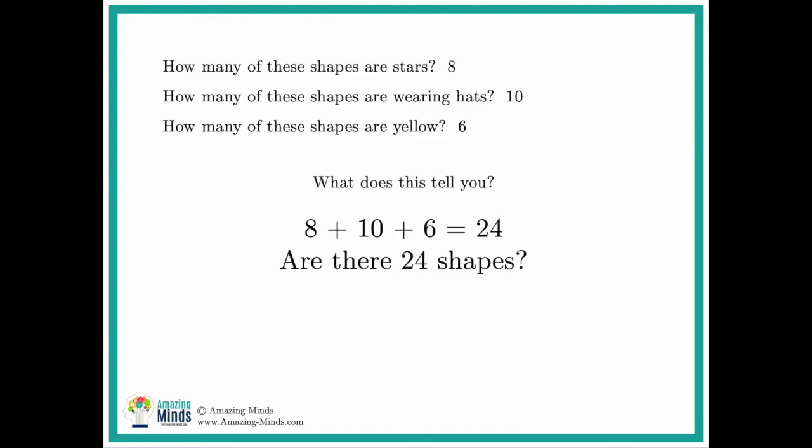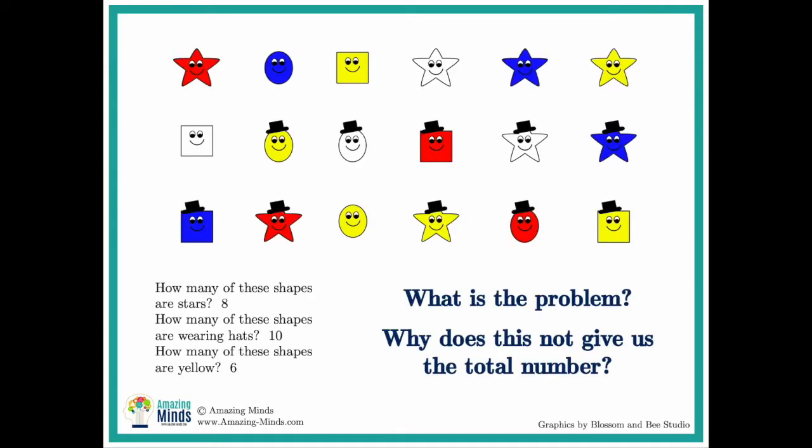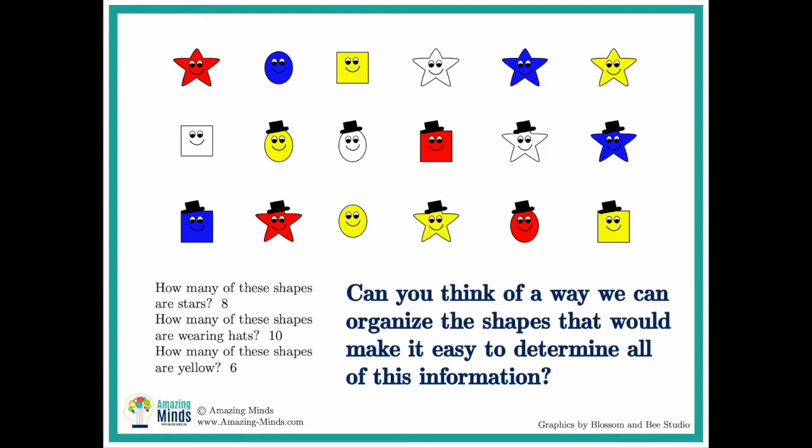Okay so now you found out that there are eight stars, ten hats, and six yellow shapes. So I can just add those together. Eight plus ten plus six equals 24. Are there 24 shapes? Now they may or may not remember because they didn't count the total number of shapes. So let's look. That's a six by three array. That's only 18 shapes. What's the problem? Why does this not give us the total number? And can we think of a way to organize the shapes that would make it easy to determine all of this information?